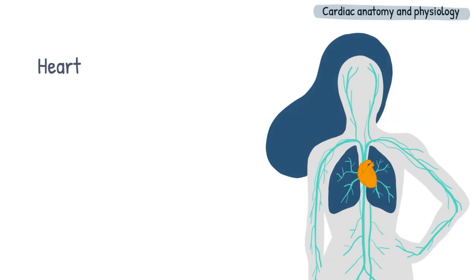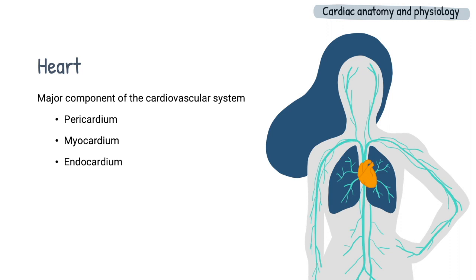The heart is a major component of the cardiovascular system, and alongside the blood vessels, it plays a vital role in transporting blood around the body. The heart is made up of three main layers of tissues, namely the pericardium, the myocardium, and the endocardium.